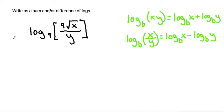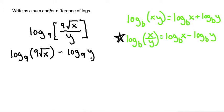And our first step, I would suggest whenever you have a fraction, to start with the second formula. Start with the division formula first. So let's rewrite this as log base nine of the numerator—I'll put it in parentheses since it's more than one thing—9 root x, and then minus log base nine of the denominator, which is y.